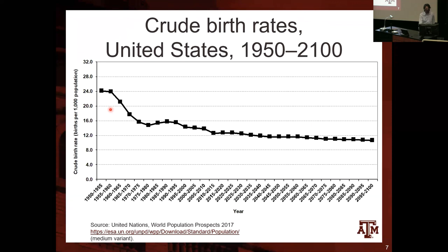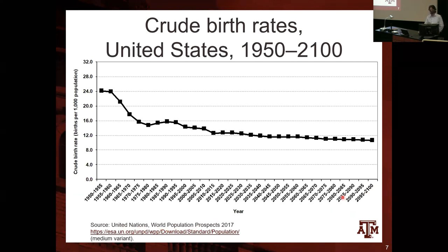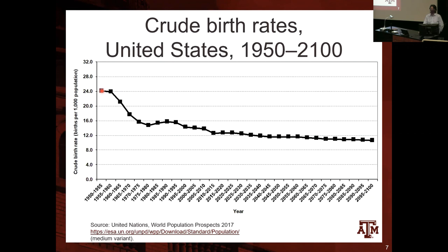Here is an example of crude birth rates in the US from the UN World Population Prospects, which has projections up to 2100. Back in 1950–1955, around 24 babies were born per 1,000 people in the US — including men and women. It declined over time and has been more stable recently, expected to remain stable in coming decades.